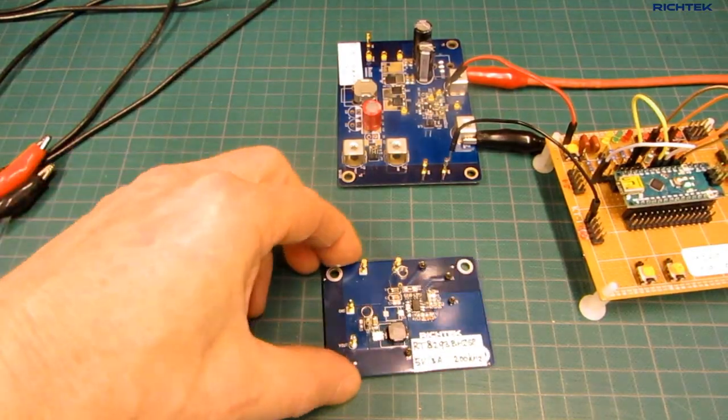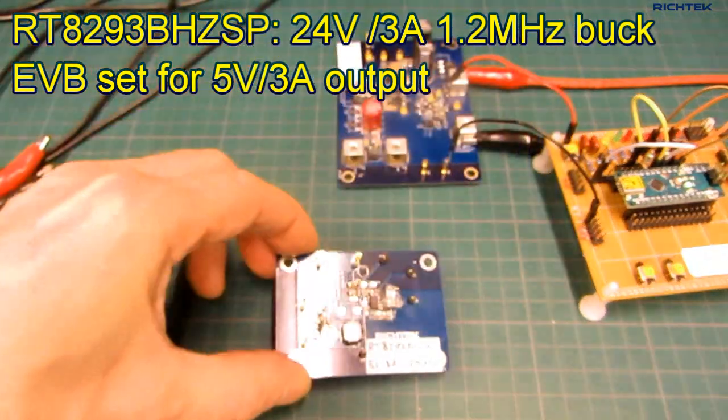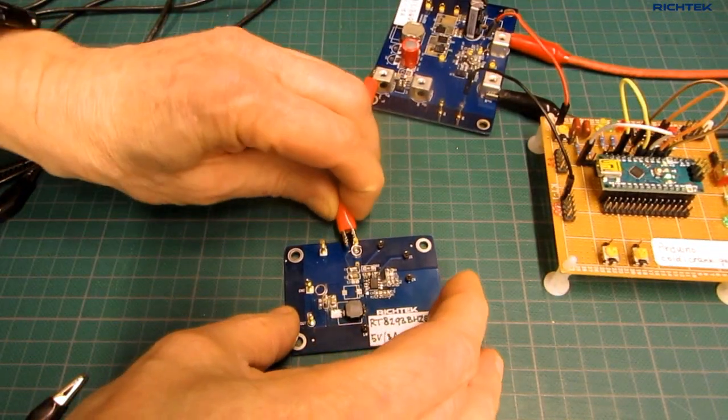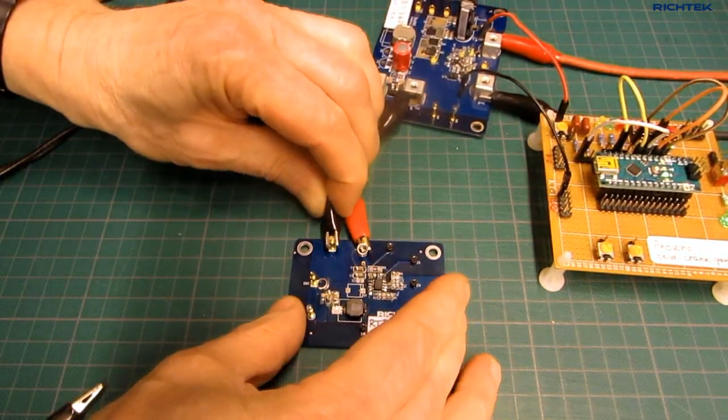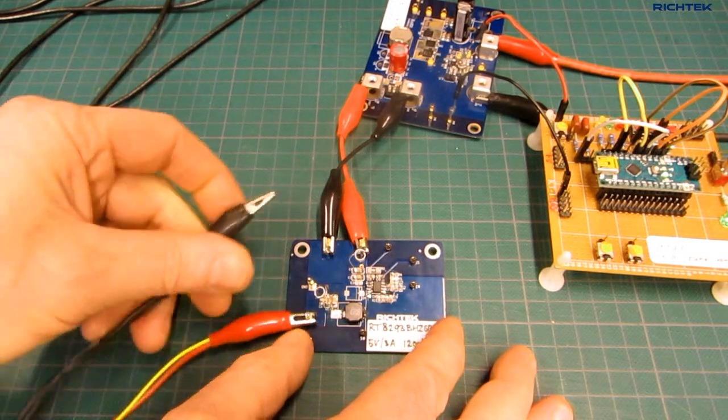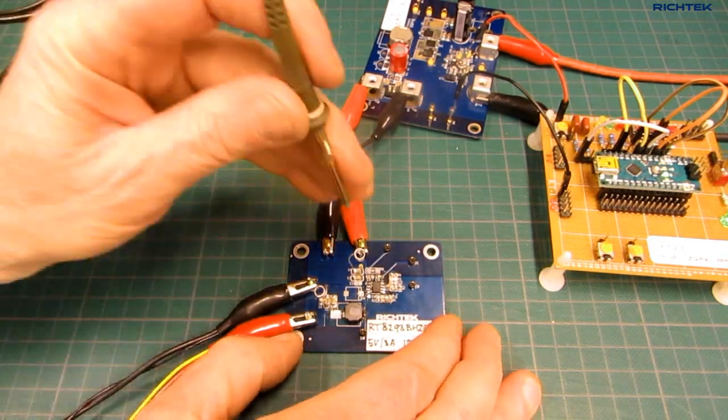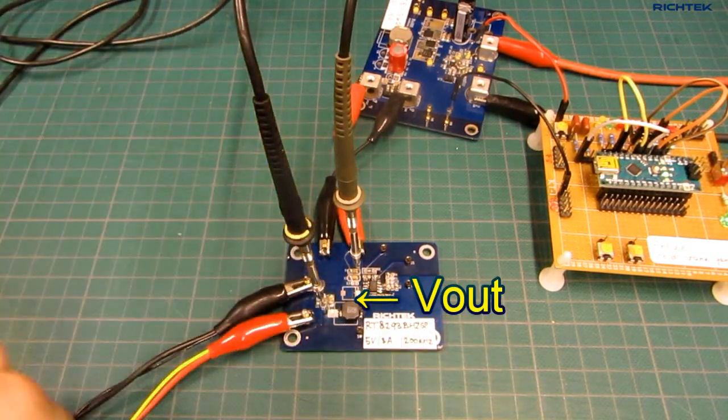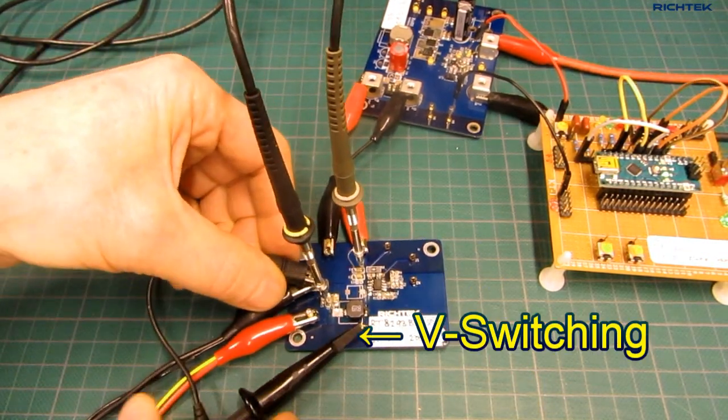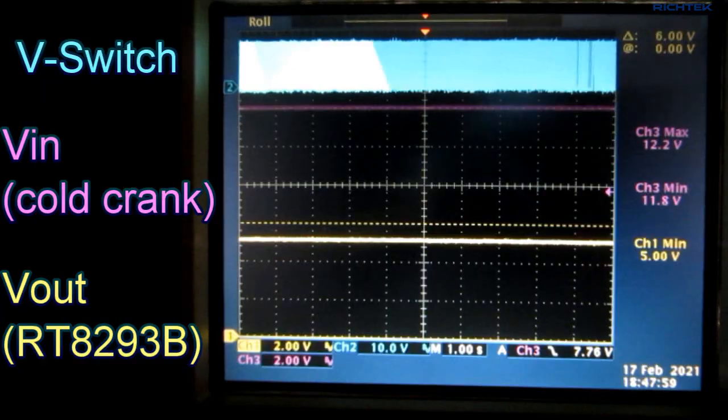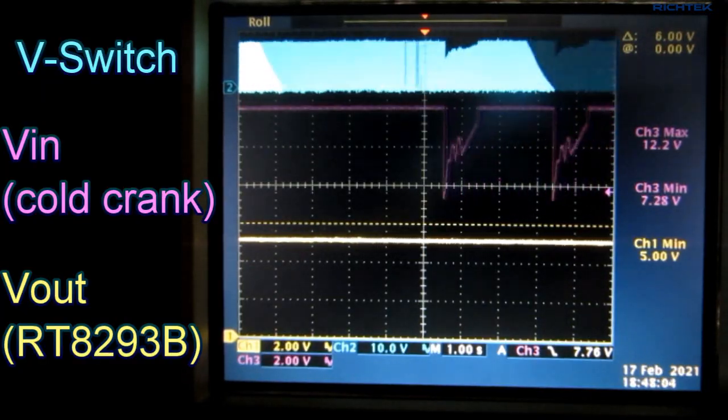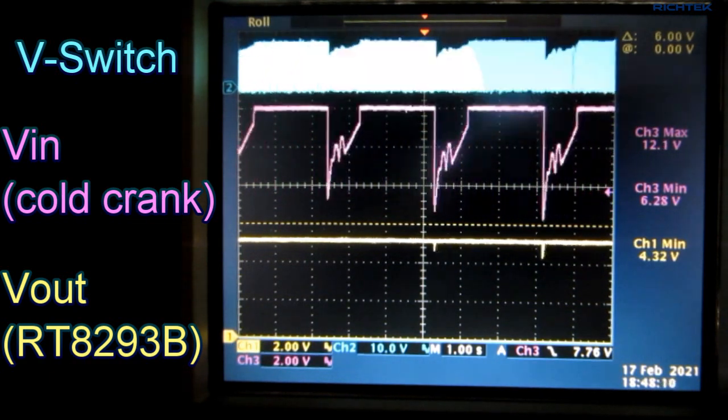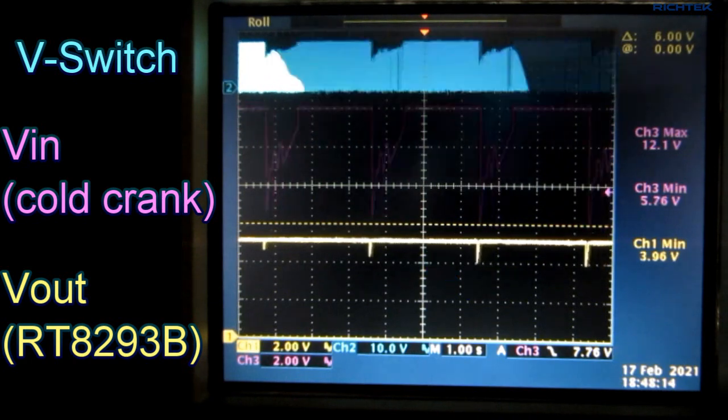Let's first test a high-frequency buck converter like the RT8293B in a 5V 3A application with this cold crank generator. I connect the cold crank generator to the buck converter input and connect a 3A load to the 5V output. I measure the buck input voltage, output voltage and switching node. You can see that when the input voltage drops below 7V, the 5V output voltage already starts to drop.